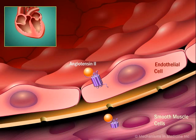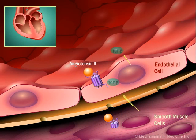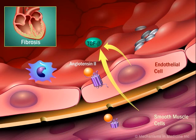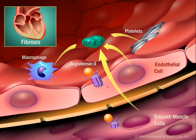In the heart, angiotensin II enhances myocardial fibrosis through increased expression of transforming growth factor beta (TGF-β), a cytokine stimulating collagen and other extracellular matrix protein production.